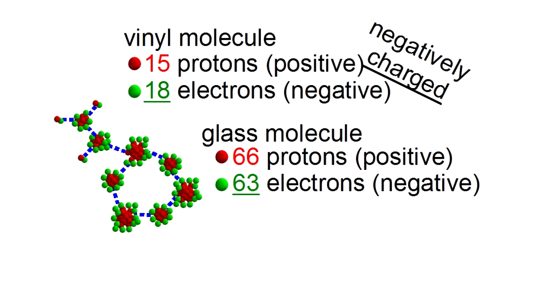Since the vinyl now has more negatively charged electrons than it has positively charged protons, the vinyl is negatively charged. And since the glass now has more positively charged protons than it has negatively charged electrons, the glass is positively charged.